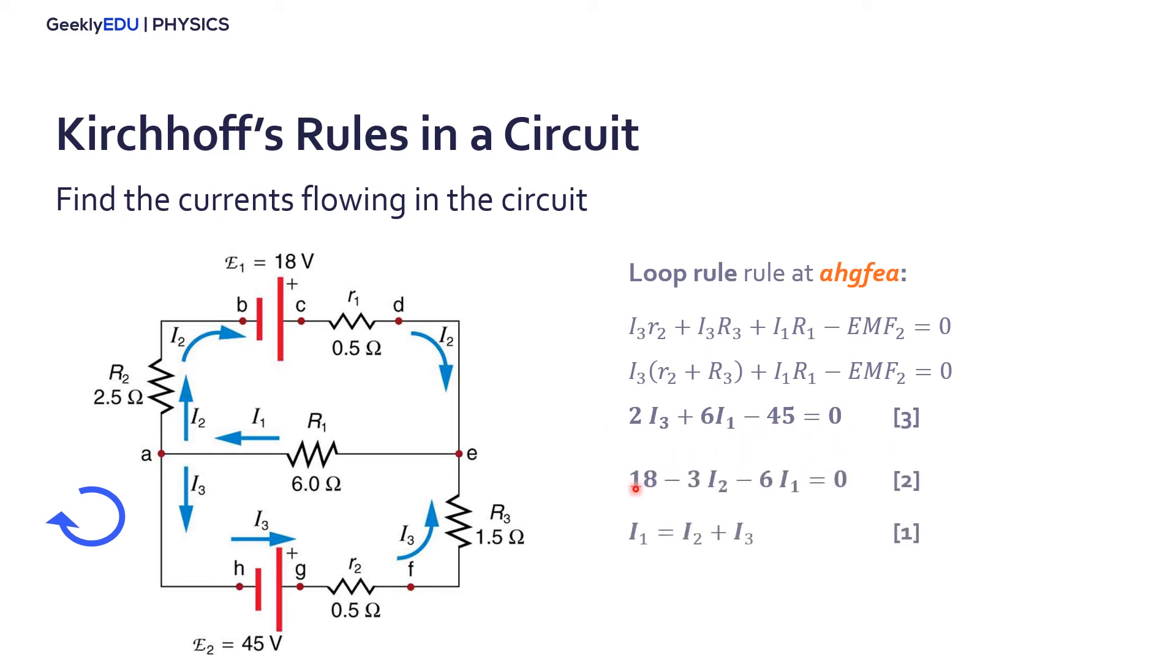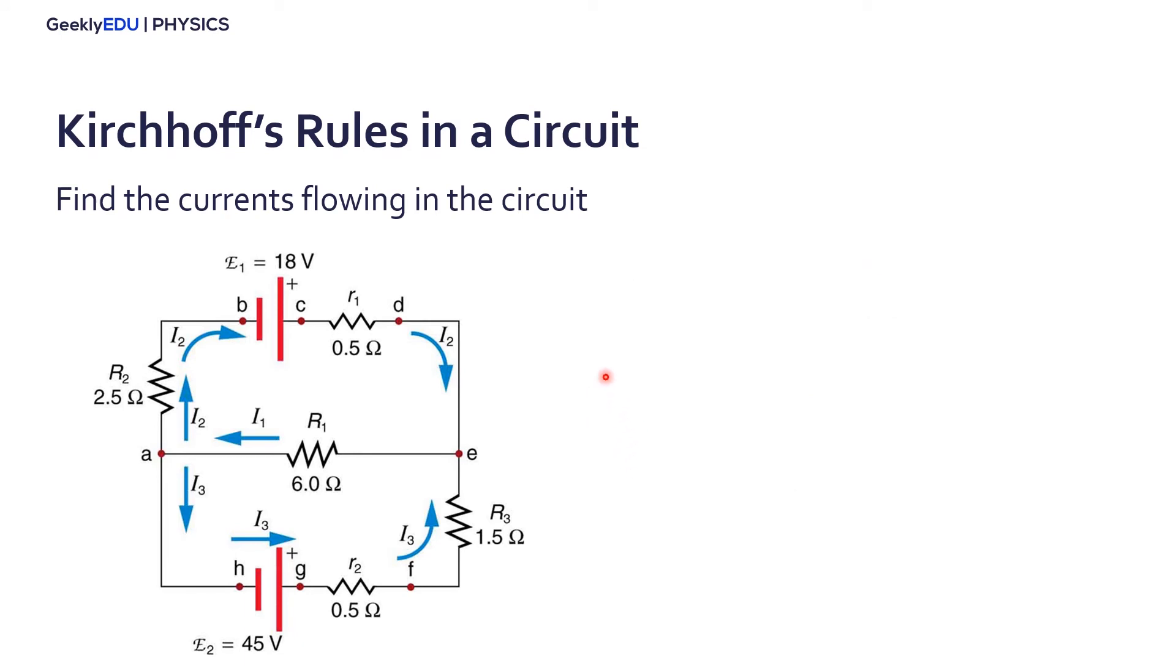And now we have three equations and three variables: I1, I2, and I3. So we can solve to find the currents. Let's start using equation number two. From equation number two, we can isolate I2 in respect to I1. We can do the same for equation number three, but isolating I3. So we have the relation for I2 and I3 in respect to I1. Then we can go to equation number one and find that I1 is actually 4.75 A.